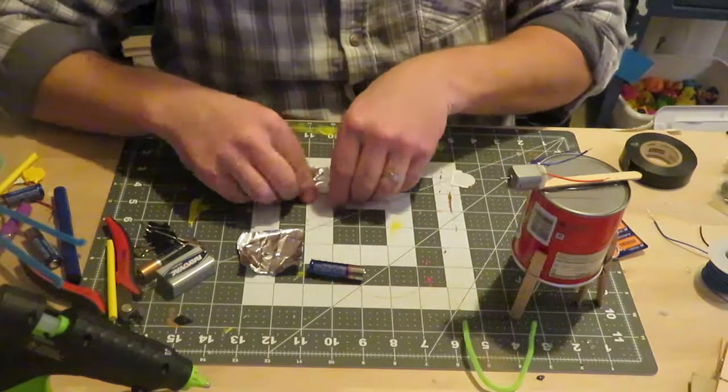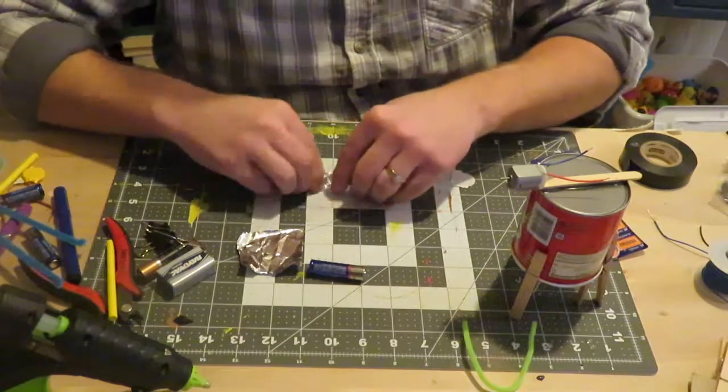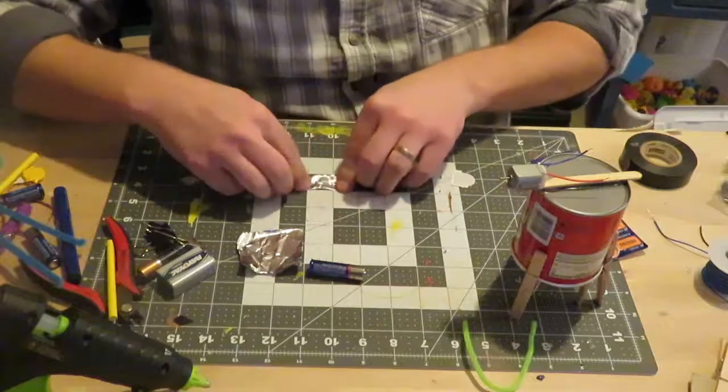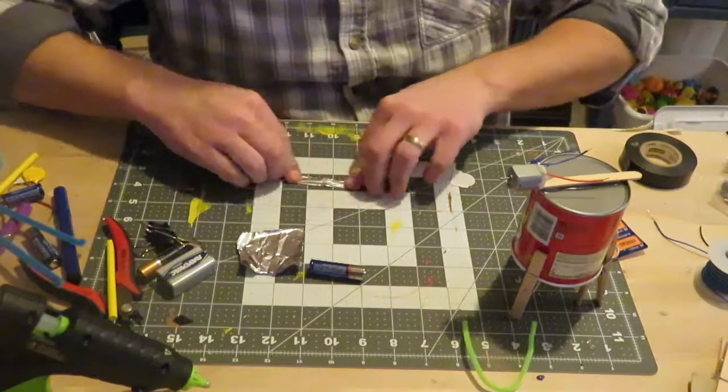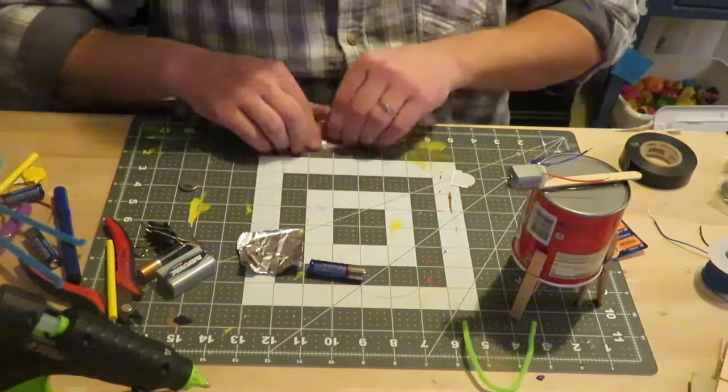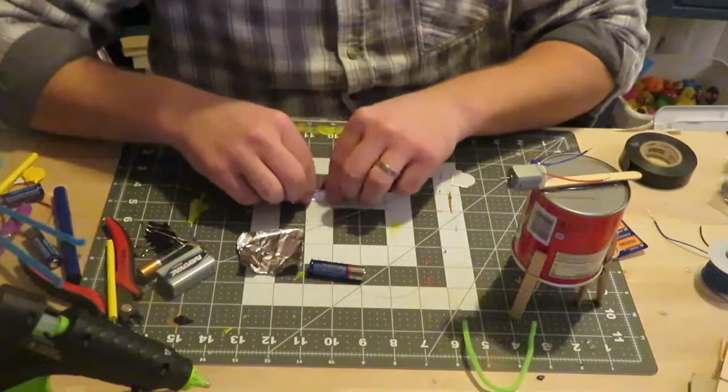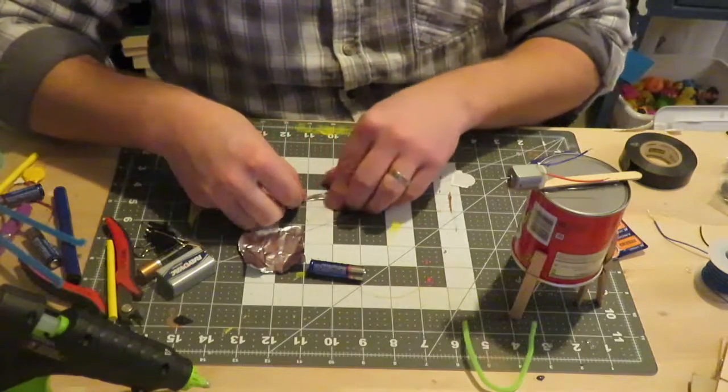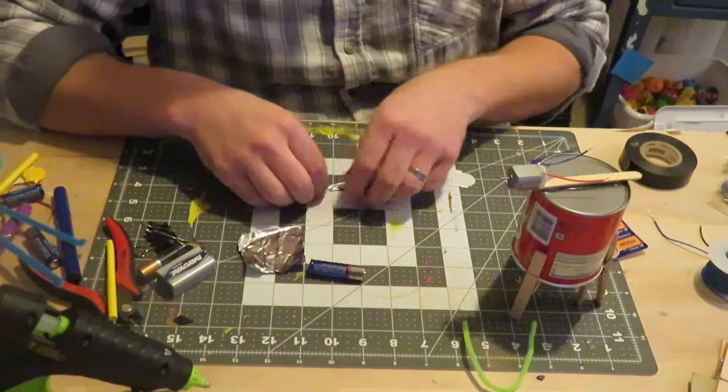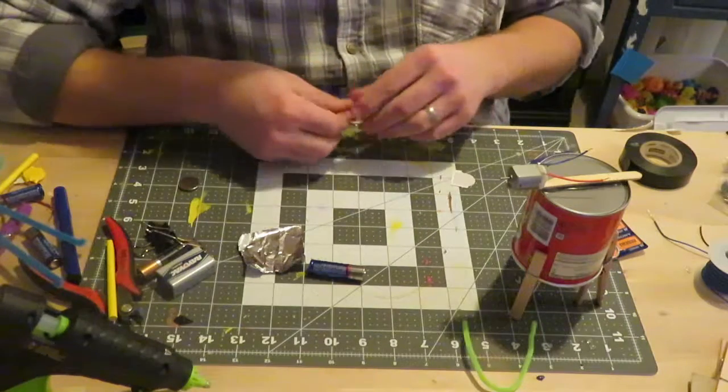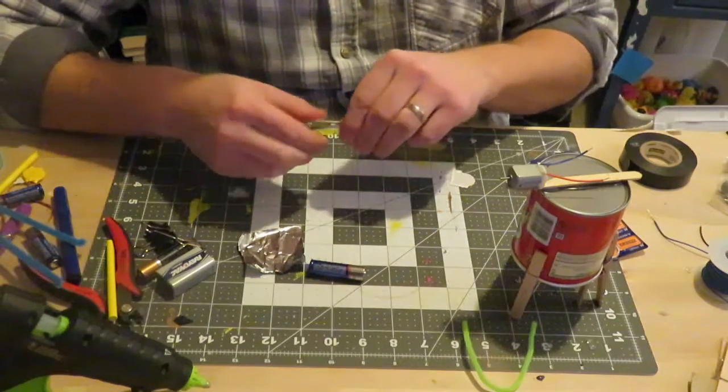And we're just going to fold this guy up just like so, just to kind of make it thicker. And this is going to act as a switch here in just a minute. And what we can do is we can create a really easy way to turn our robots on and off so we're not killing our batteries.